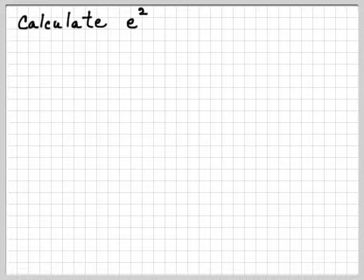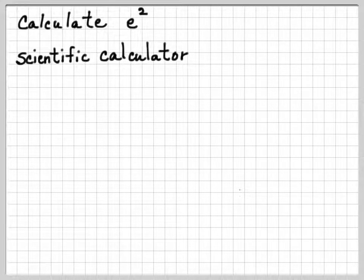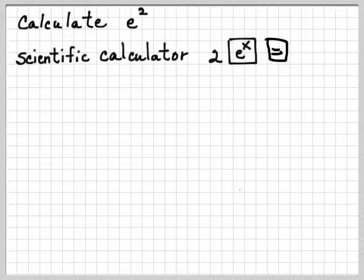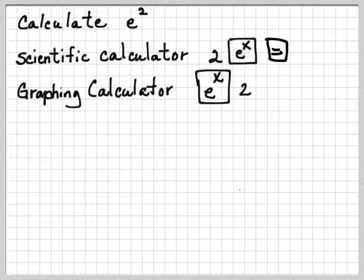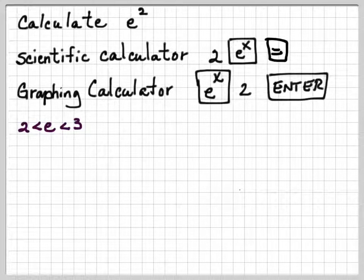Let's do some calculations here to make sure that you can use your calculator properly. If I wanted to calculate e to the second power, if I have a scientific calculator, my keystrokes might look something like this: 2, and then press your e raised to the x, and then your equal sign. If you have a graphing calculator, you would probably press e to the x using the second function key, and then a 2, and then enter. When you do this, you should get your 2.7 whatever raised to the second power.